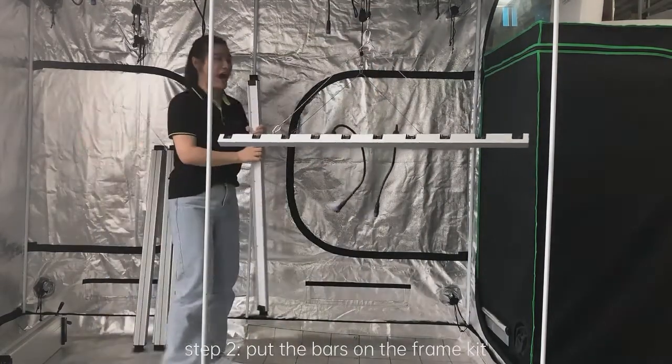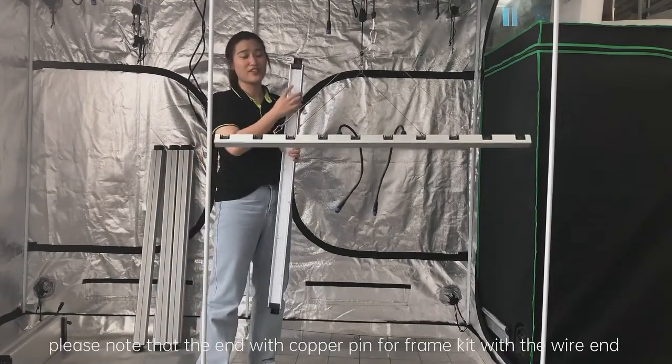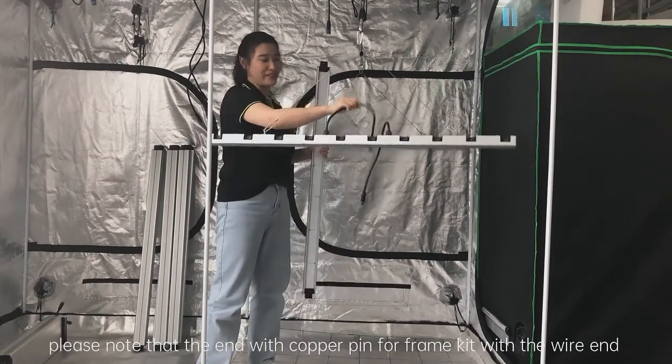Step 2: Put the bar to the front kit. Please note that the end with the copper pin for front kit with the wire end.